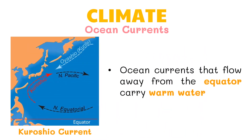Ocean currents that flow away from the equator carry warm water. The air above the warm water has higher temperature. When ocean currents bring warm water towards a coastal region, the temperature of that place increases, resulting in a warm climate. For example, the warm Kuroshio current that comes from the northeastern part of the Philippines brings warm water, raising the temperature of places in the southeastern part of Japan.